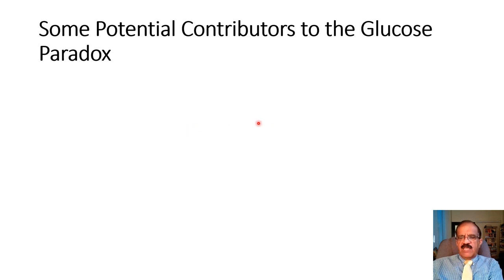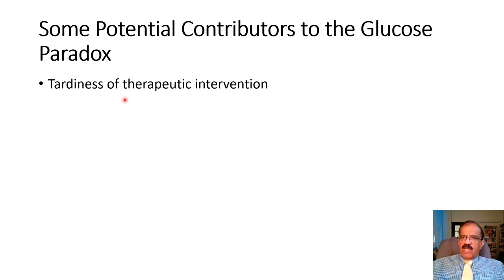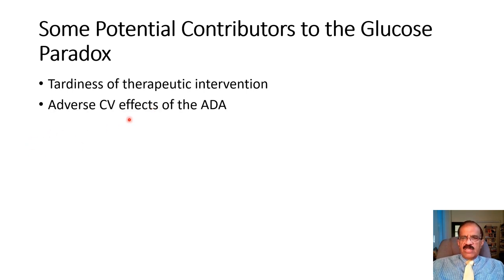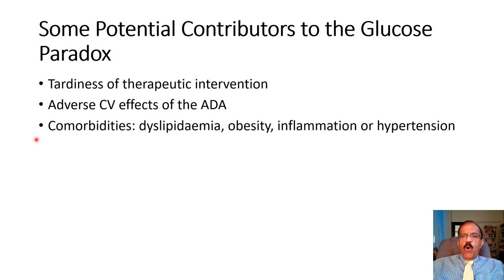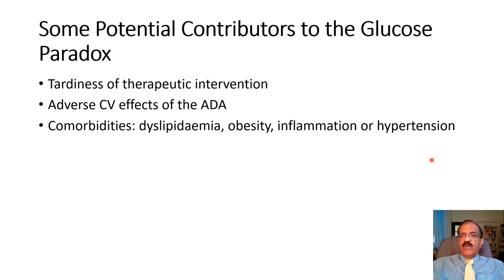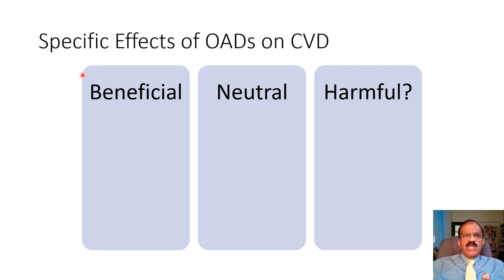Some potential contributors to the glucose paradox — why glycemic control does not reliably prevent atherosclerotic cardiovascular disease — include tardiness of therapeutic intervention, possible adverse effects of some anti-diabetic agents on CVD, and most importantly, comorbidities such as dyslipidemia, obesity, inflammation, and hypertension. If you just focus on glucose and maintain a good HbA1c while these comorbidities remain unaddressed, complications will still develop.